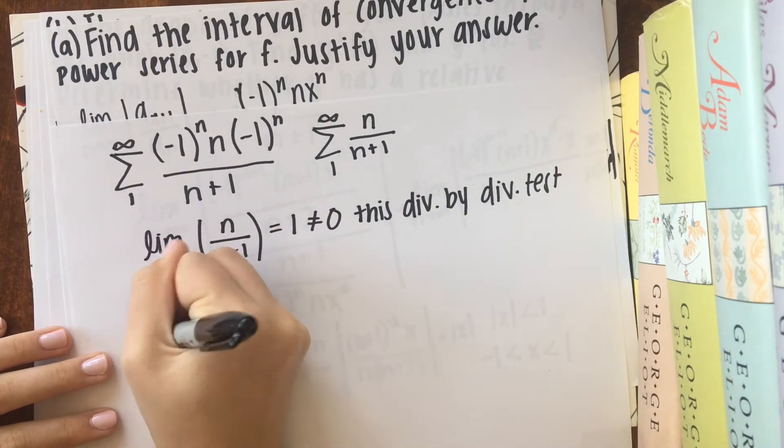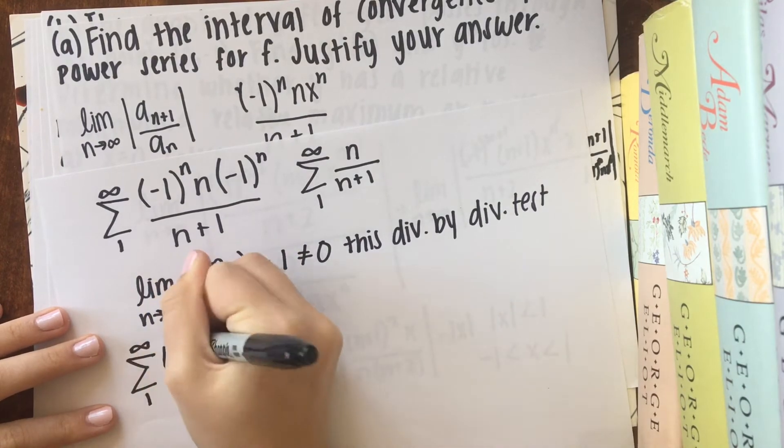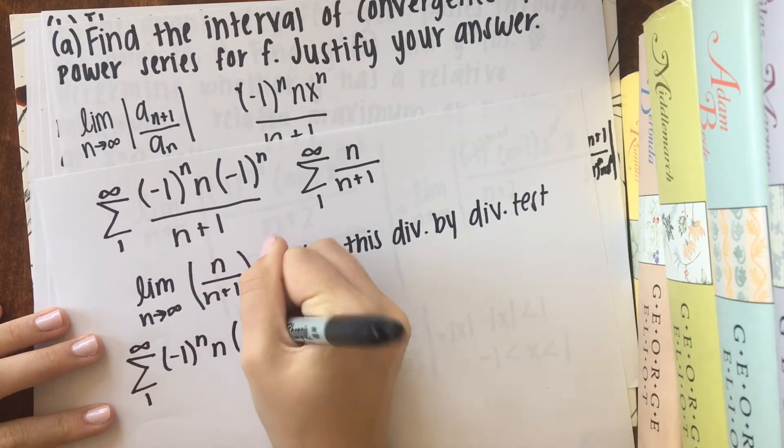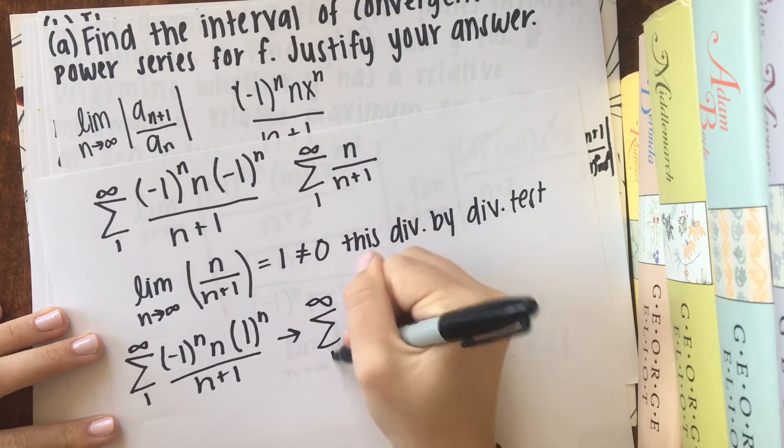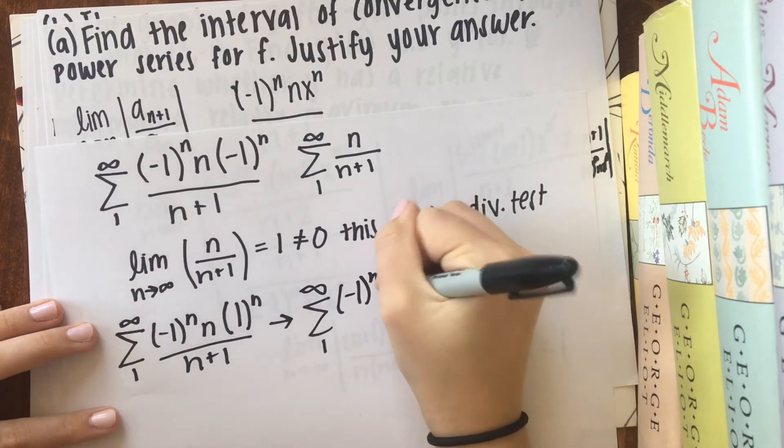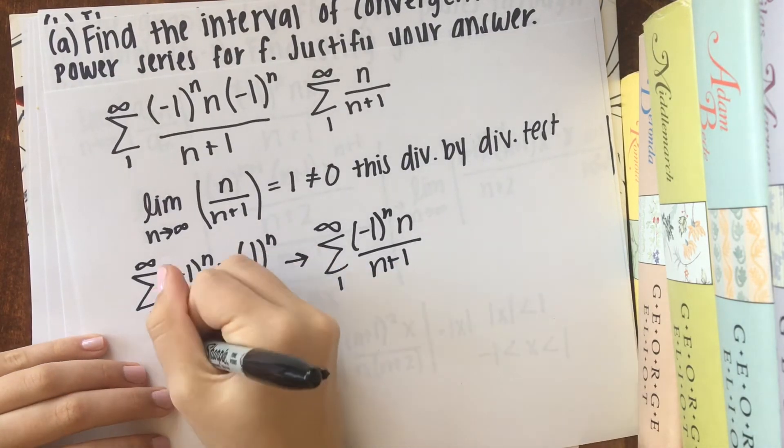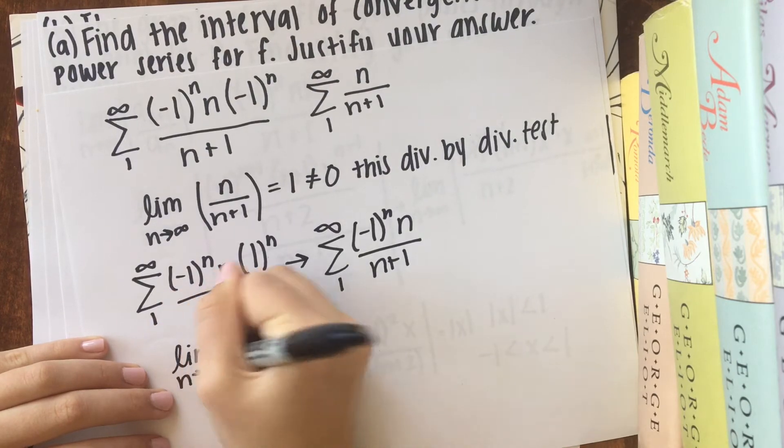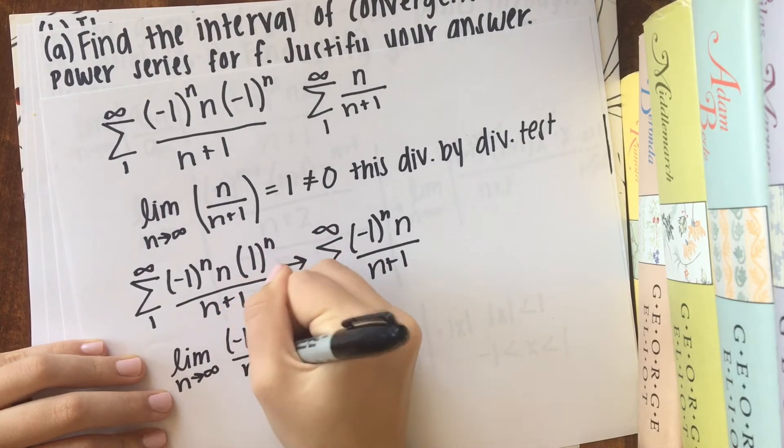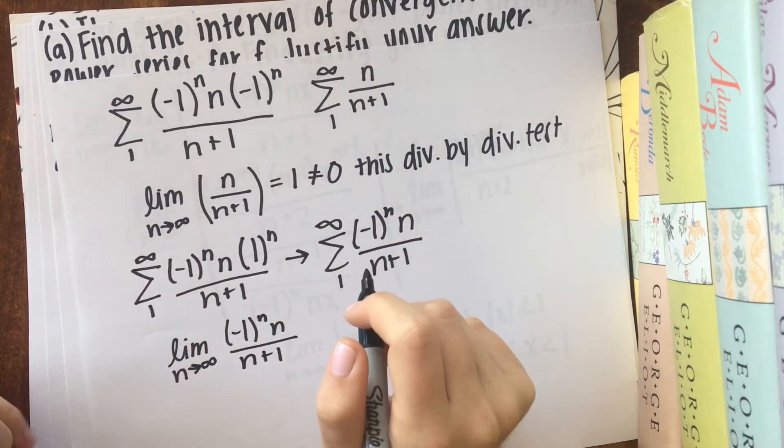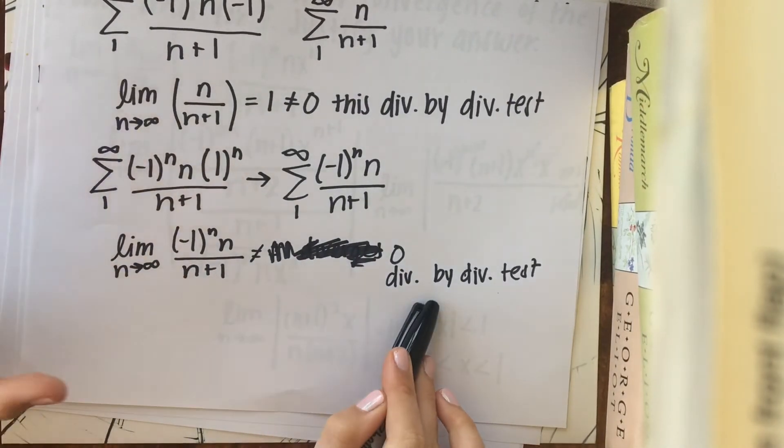And now I'm going to do that again, but with plugging in 1 for x because that was our other endpoint. And that's just going to go to that. And now the same thing here. When we do the limit as n approaches infinity of this a sub n. So since this limit does not equal 0, this diverges by the divergence test.